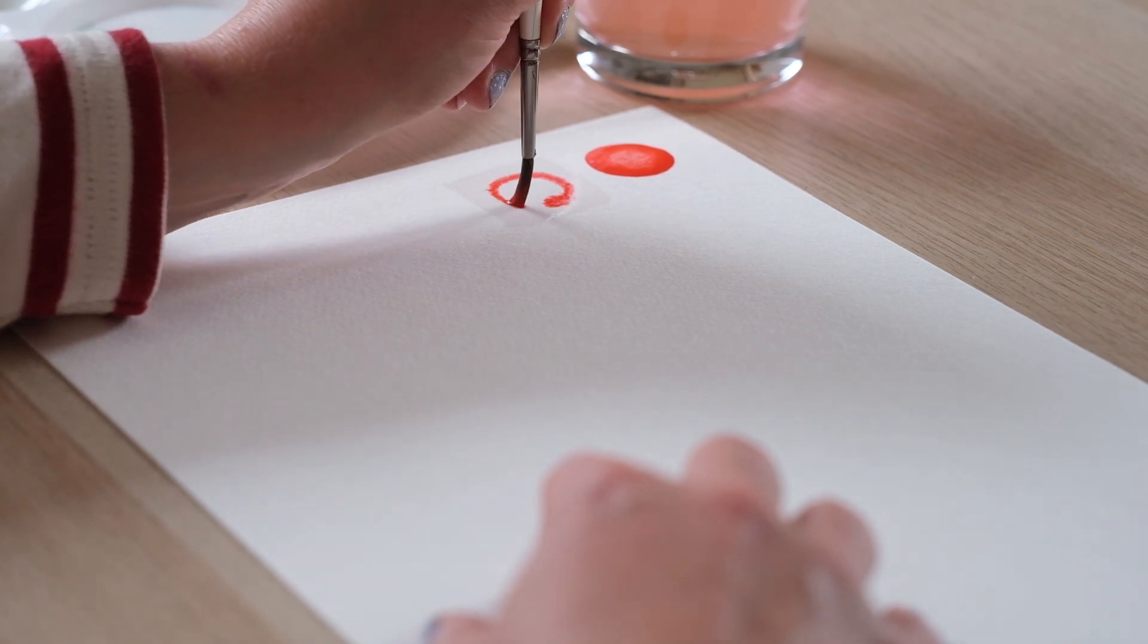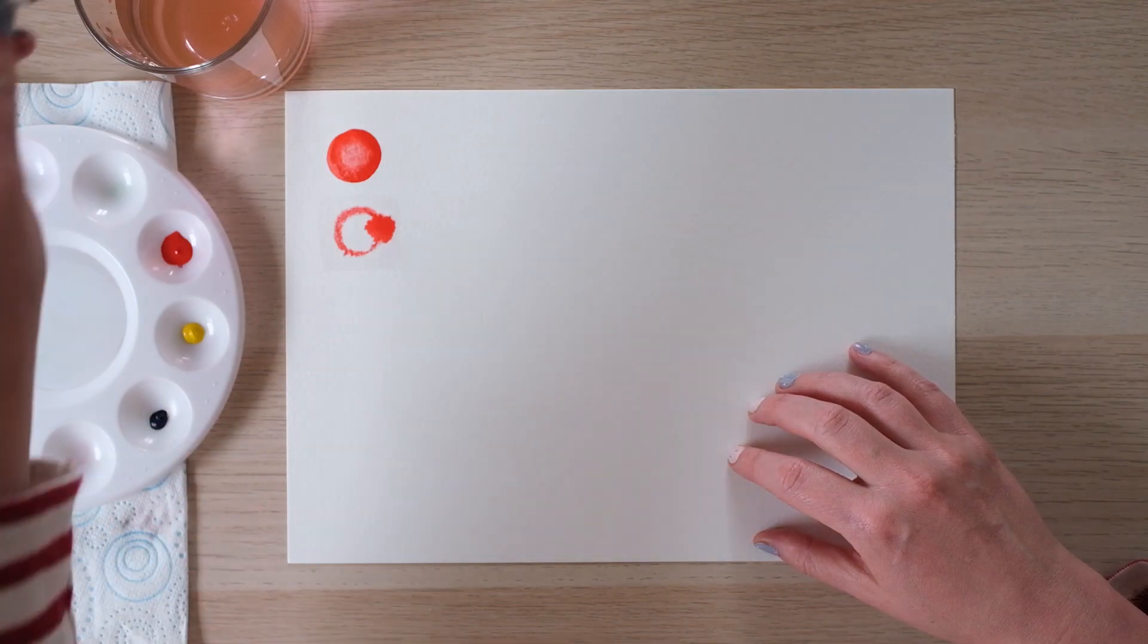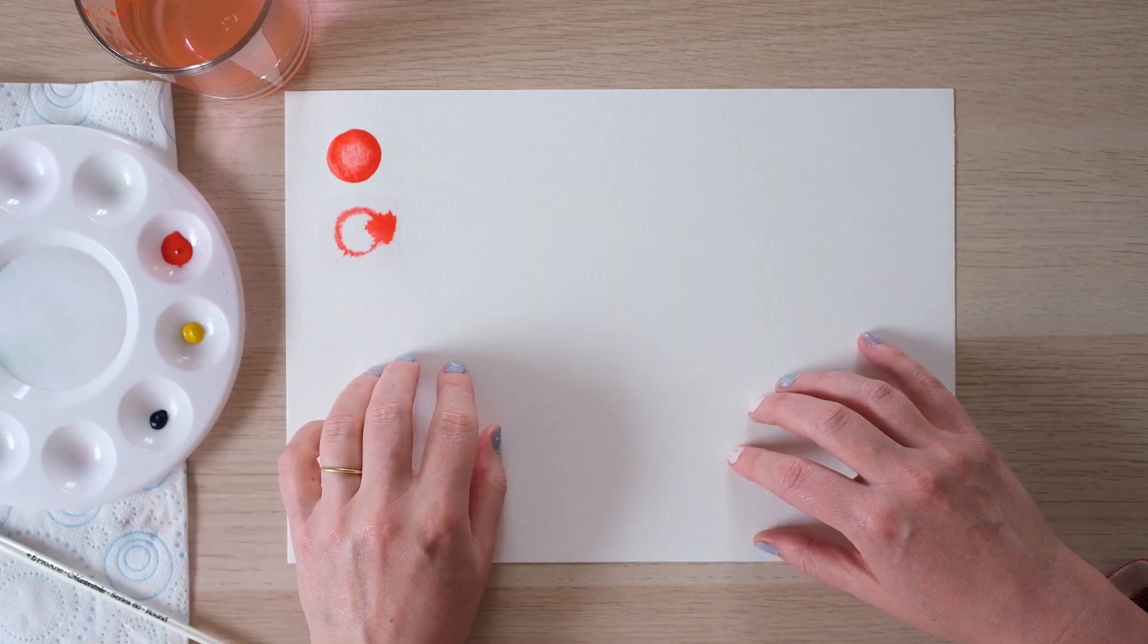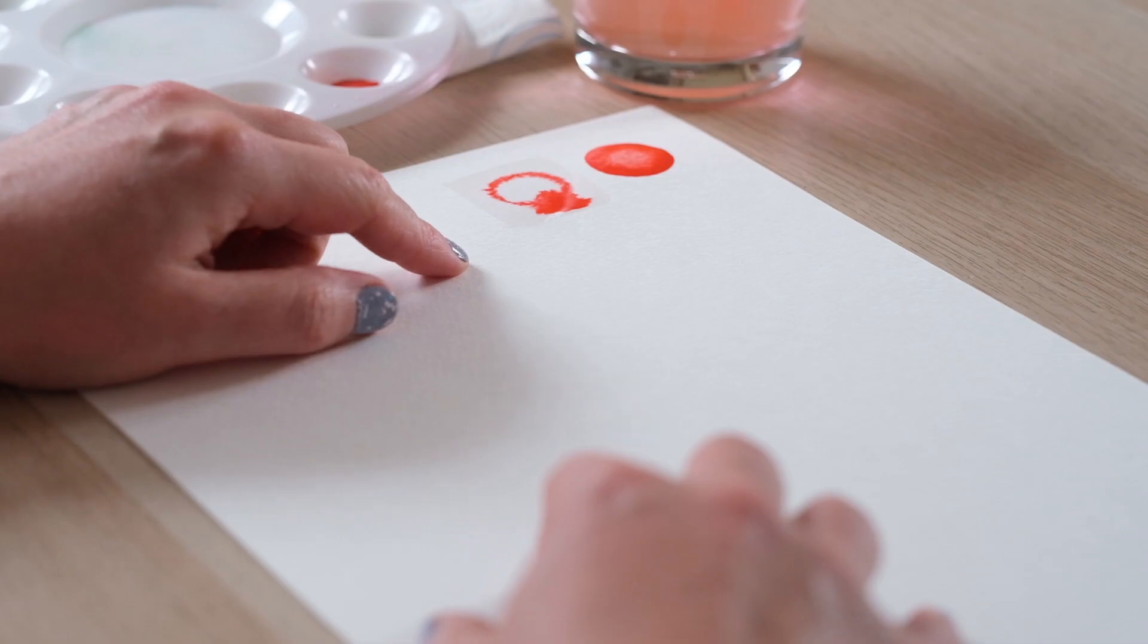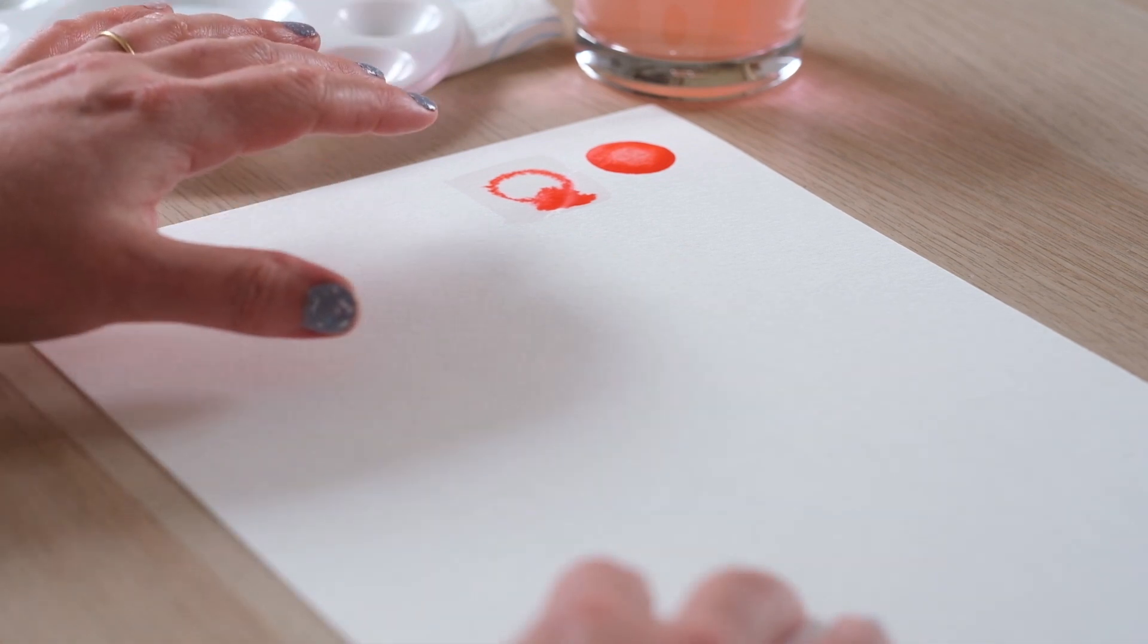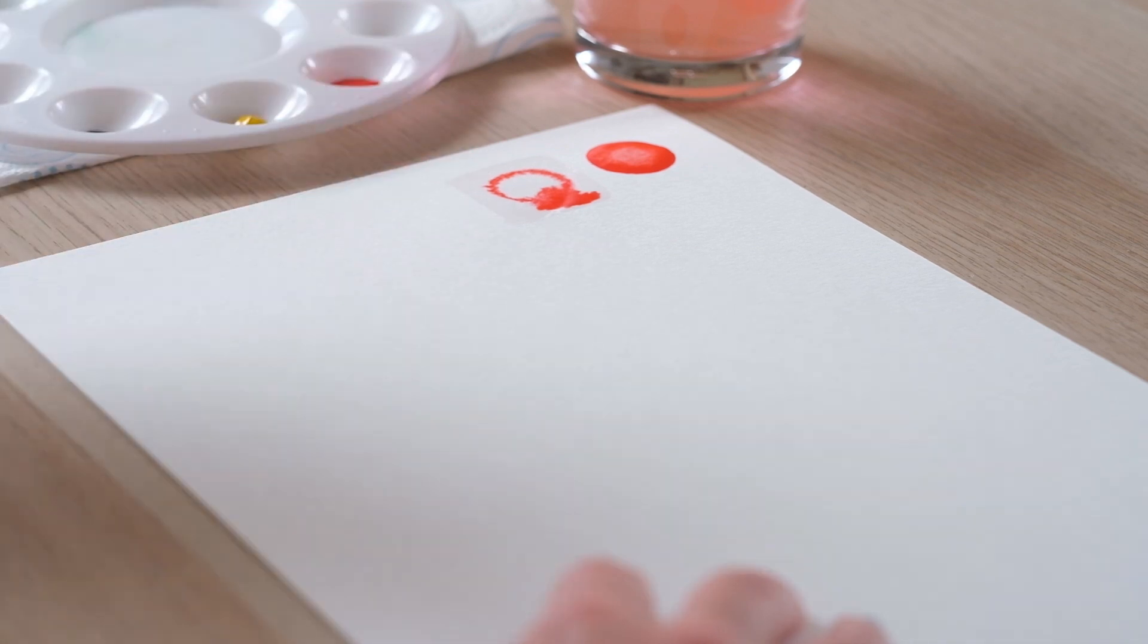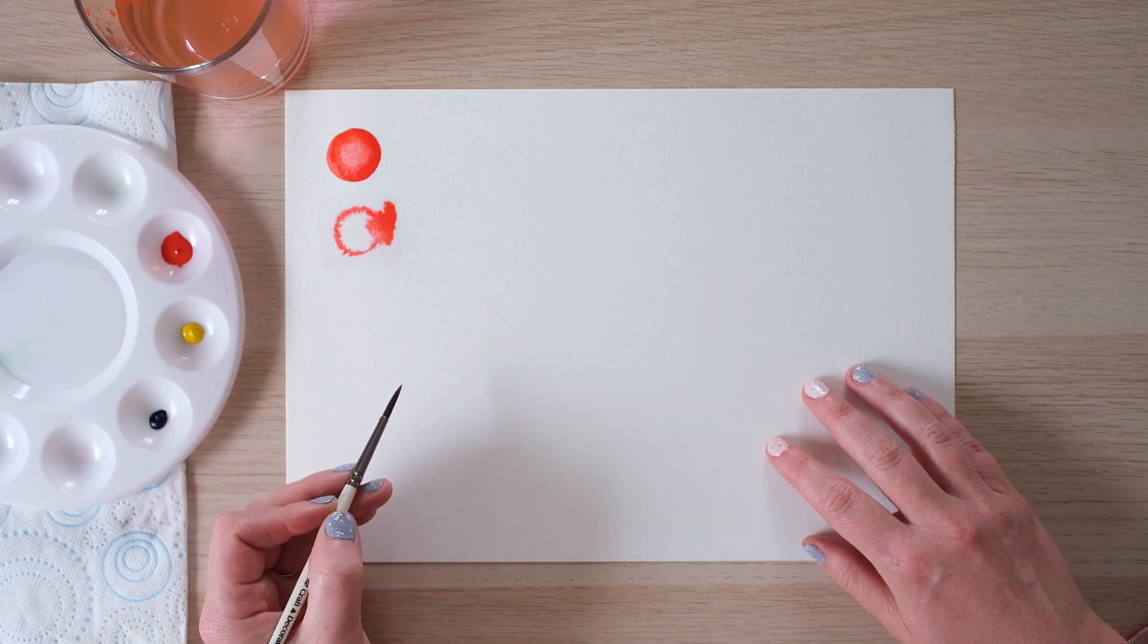Wow. Now it is so tempting to try and poke about and control the paint on the wet page, but the beauty of watercolour is that it does things that the human hand could never dream of doing with the paintbrush so you've just got to let it go and you've got to try your hardest not to poke about and just allow it to do its thing.